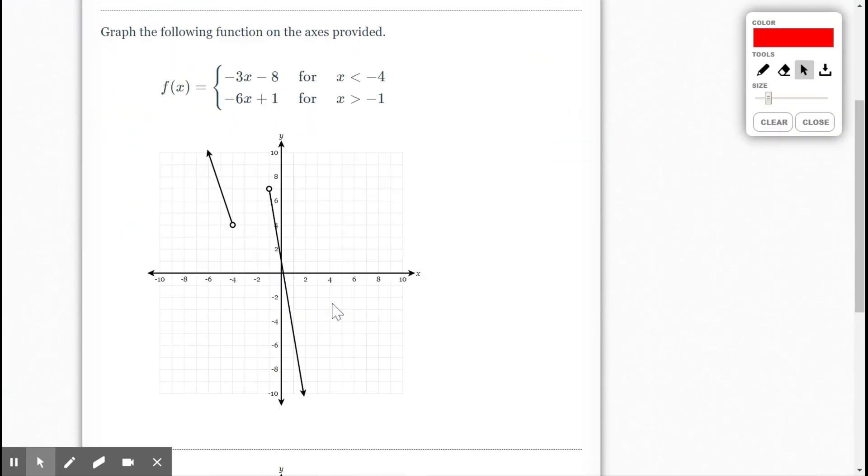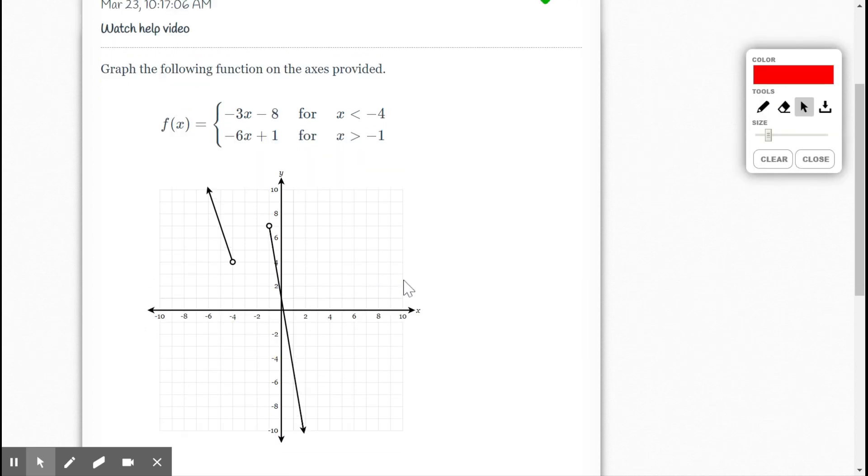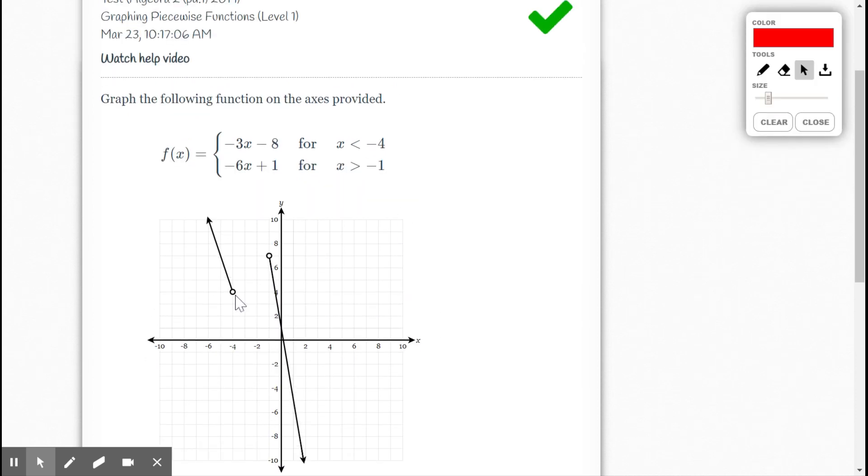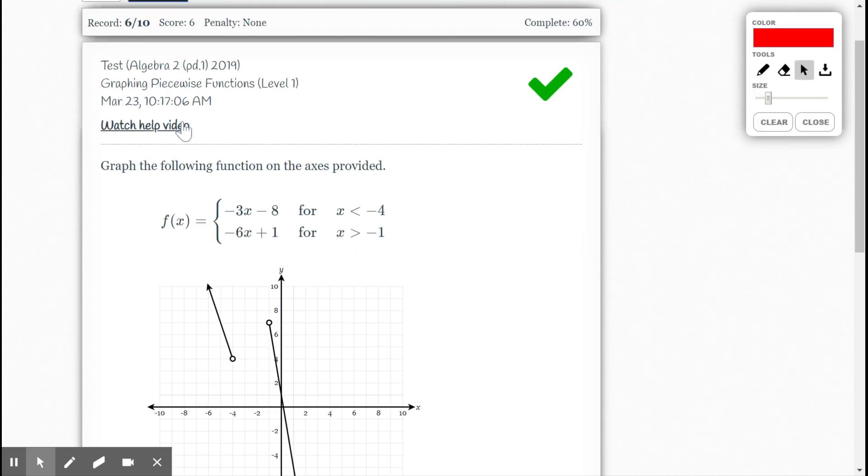And yay, I got it right. So if you get it wrong, the best thing to look at is to see if you did the hollow or open dots correctly. And then check your restricted domains. The help video, again, is really helpful.